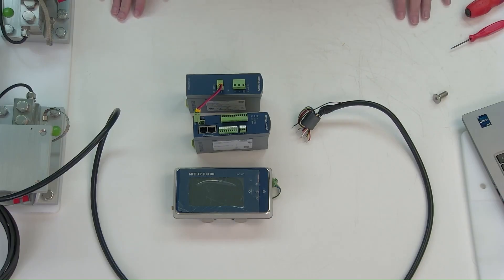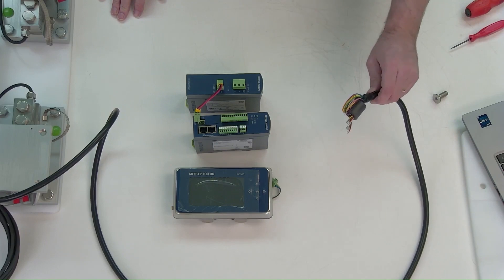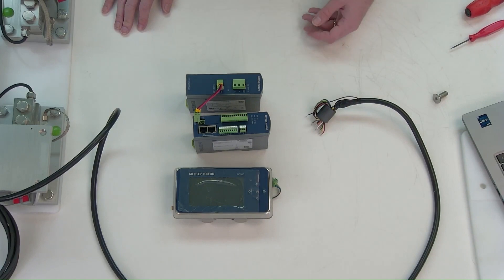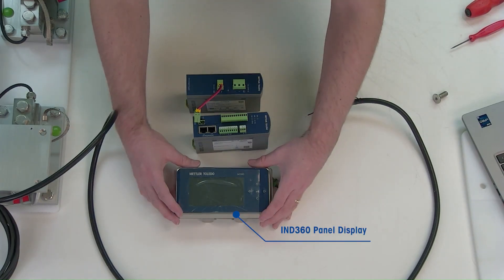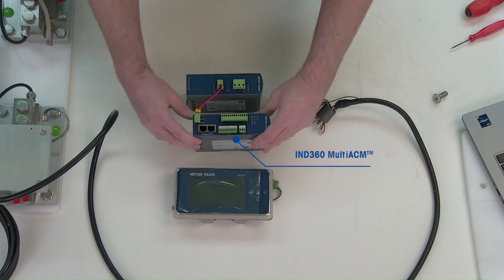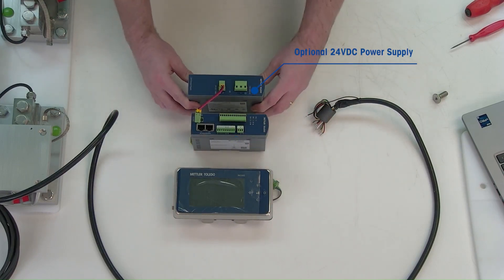Here we have the other side of the home run cable that will go to the IND 360. This would typically already be installed in the cabinet, but for this video we're showing it on the tabletop. We have the IND 360 panel mount display along with the IND 360 multi-ACM device and the optional 24-volt power supply.